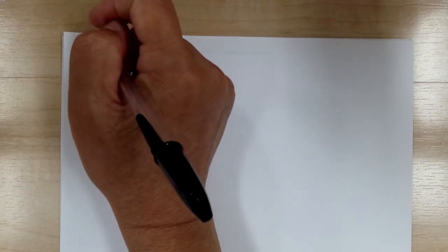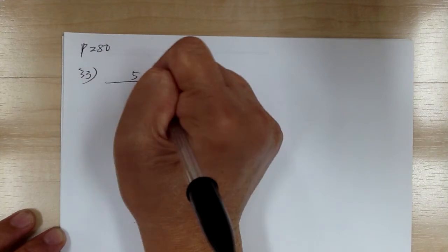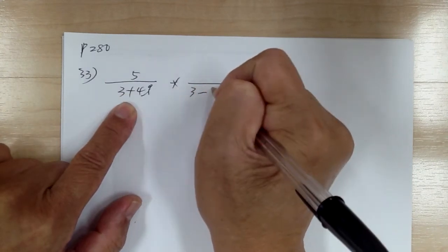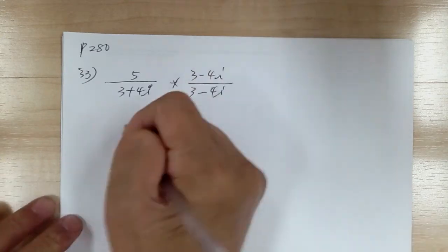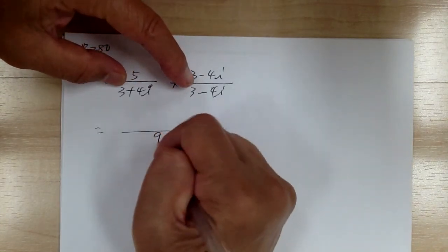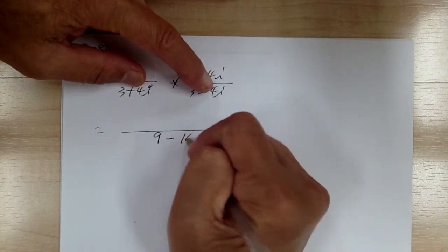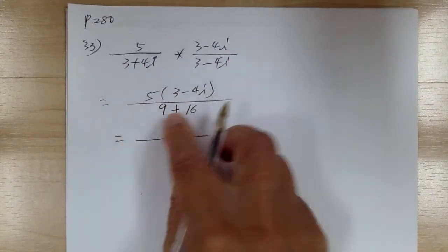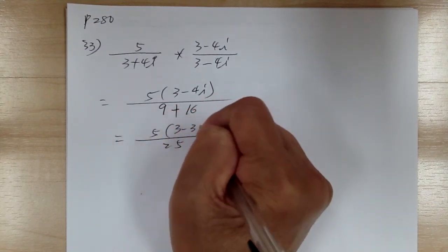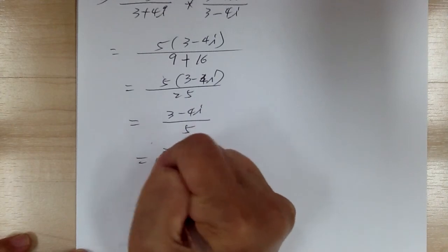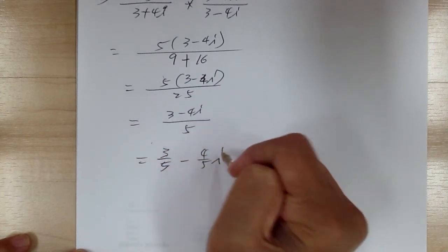Number 33: you got 5 over (3 plus 4i). To simplify, multiply by the conjugate: (3 minus 4i) over (3 minus 4i). Do the bottom first — don't multiply out the top yet, because you might be able to cancel. Conjugate gives 9, and 4 times 4 is 16, i times i is negative 1, so it becomes plus 16, giving 25. You can cancel, so you end up with (3 minus 4i) over 5, which you put in a plus bi form.